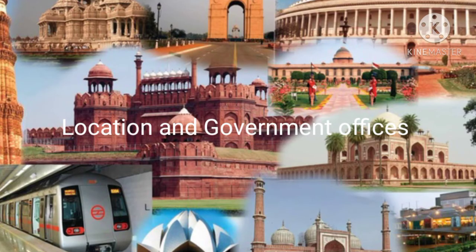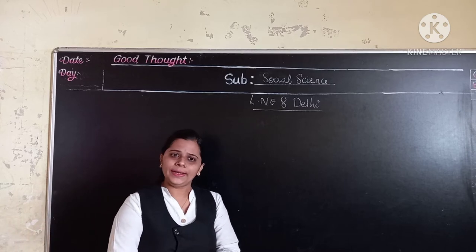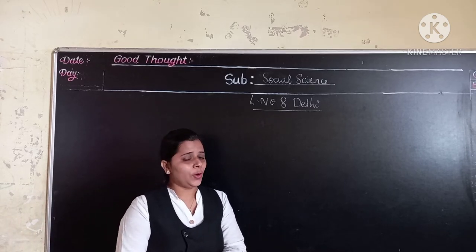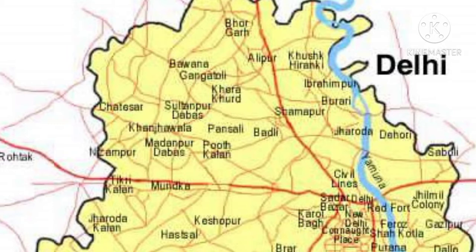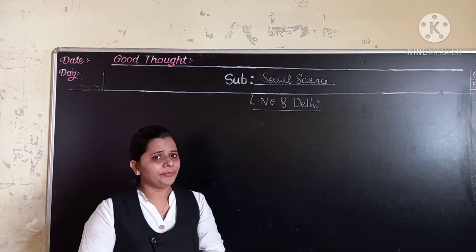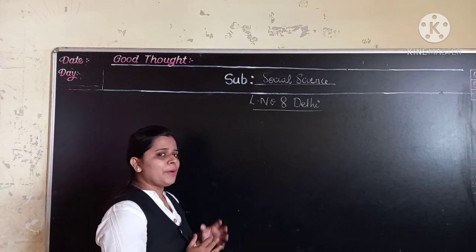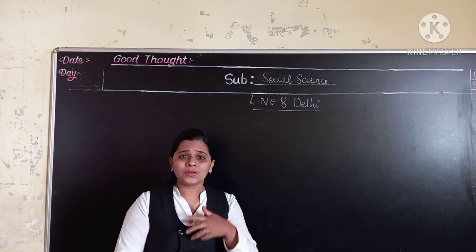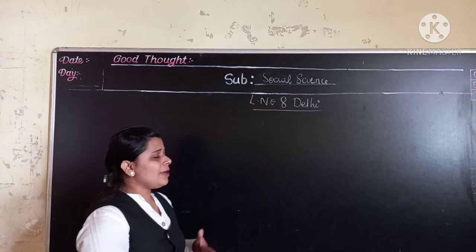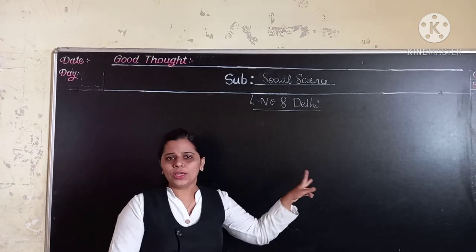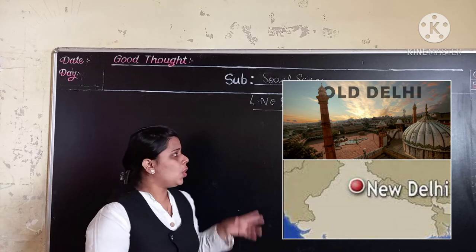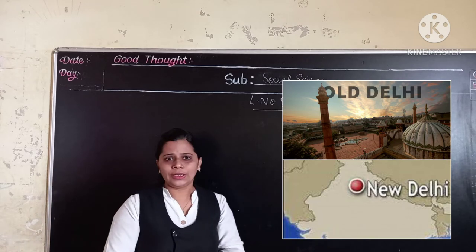So students, can you tell me where this Delhi is located? It is located on the bank of river Yamuna. And can you tell me students, with whom it shares its boundary? It shares its boundary with Uttar Pradesh and Haryana. Now students, in that we have discussed that Delhi is divided into two equal parts, that is Old Delhi and New Delhi.